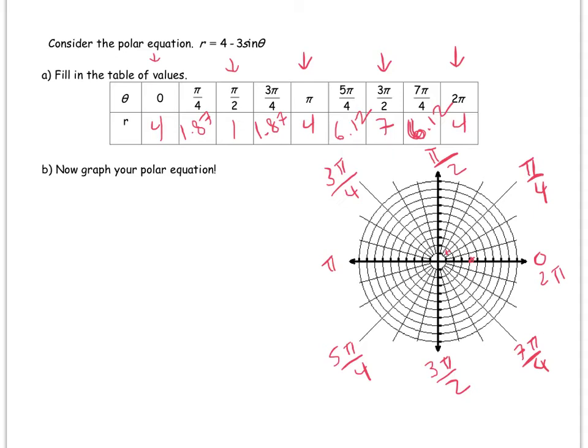But when you rotate π over 2, you walk out 1. So I'm facing π over 2 and I walk out 1. 3π over 4, it's 1.87 again. When I rotate π, I walk out 4.